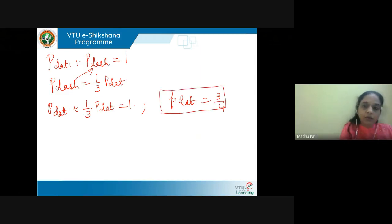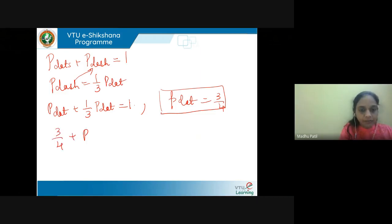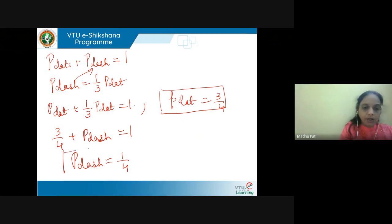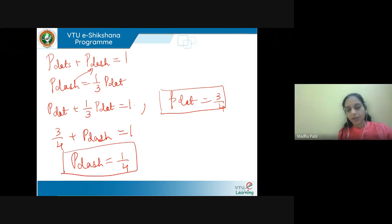Substituting p_dot = 3/4 back into the first equation, p_dot plus p_dash equals 1, I get p_dash equals 1/4. So I now have the probabilities: p_dot = 3/4 and p_dash = 1/4.